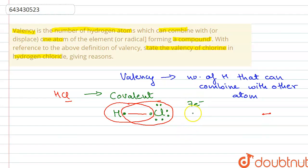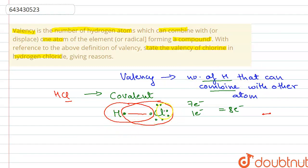Chlorine wanted one electron to complete the octet, and this one electron was shared by hydrogen. Also from the definition, the number of hydrogen atoms that can combine with another atom — since only one hydrogen is able to combine with chlorine to form HCl, the valency of chlorine is one.